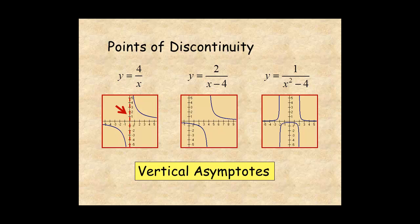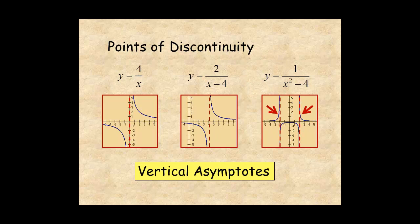For the second function, the VA is the line x equal 4. And for the third function, there are two VAs at x equal negative 2 and x equal positive 2.